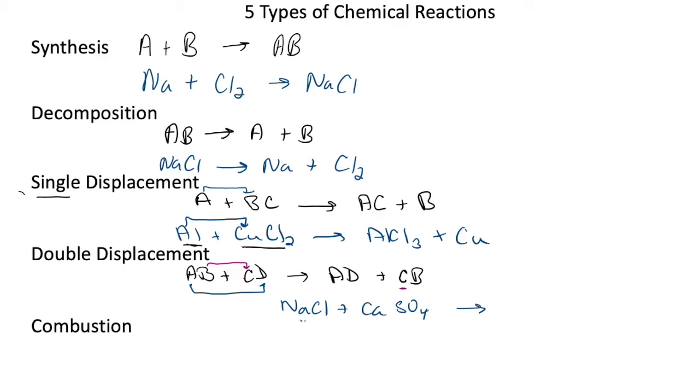The sodium or metal of the first compound in the reactants will form a new compound with the non-metal of the second compound in the reactants, which will be sodium sulfate. The second element in the second compound will combine with the first element in the second compound to form calcium chloride.